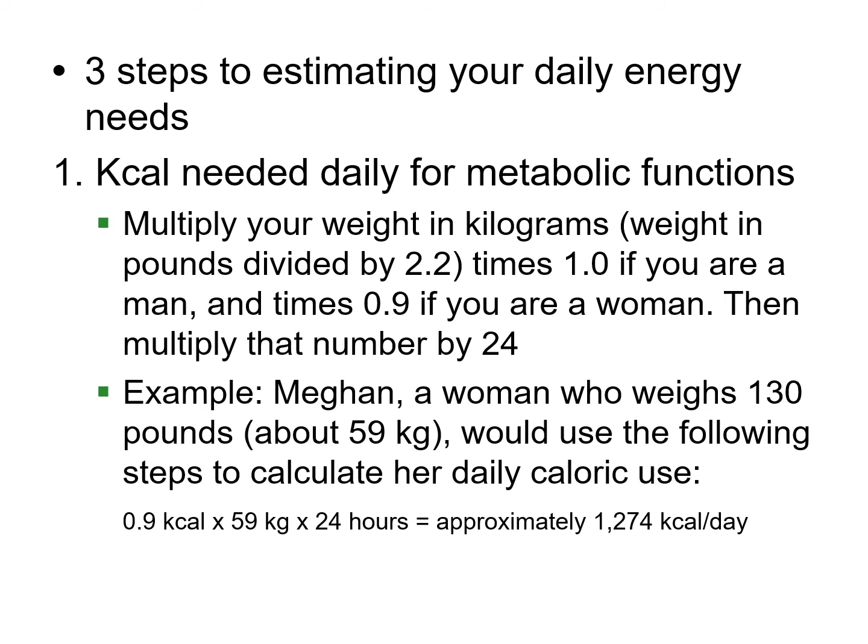To calculate kilocalorie needs, take your weight in pounds divided by 2.2 to get kilograms, then multiply by 1 if you're male or 0.9 if you're female, then multiply by 24 hours. For example, Megan is a woman weighing 130 pounds. Divide by 2.2 to get 59 kg, multiply by 0.9, then by 24 — she needs about 1,271 kilocalories per day just to live, breathe, and sit still.